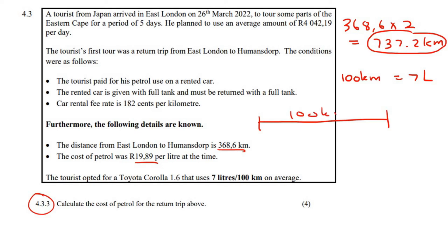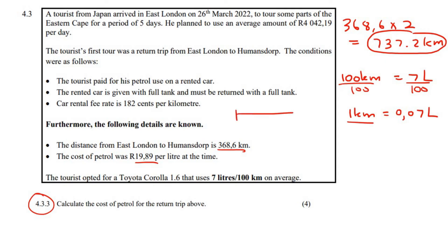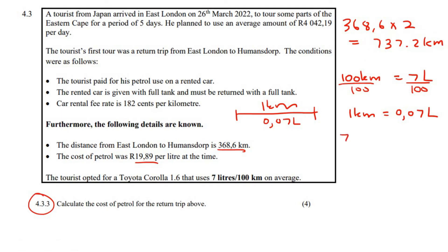For every 100 kilometers, this car will use seven liters of petrol. So how much would it use in one kilometer? You divide both sides by 100, so one kilometer will use 0.07 liters. If your car drives one kilometer, it will use 0.07 liters of petrol. We drove 737.2 kilometers, so we calculate 737.2 multiplied by 0.07, which equals 51.604 liters of petrol.